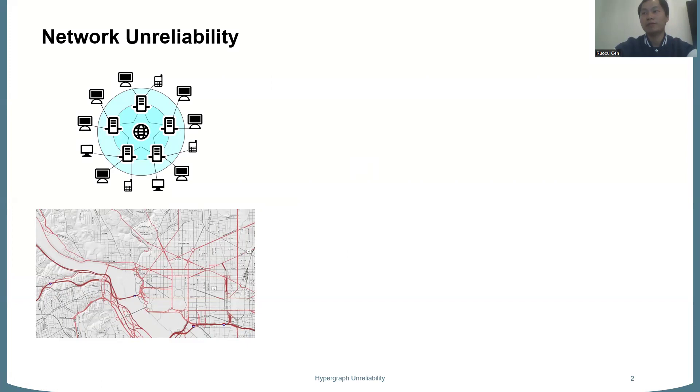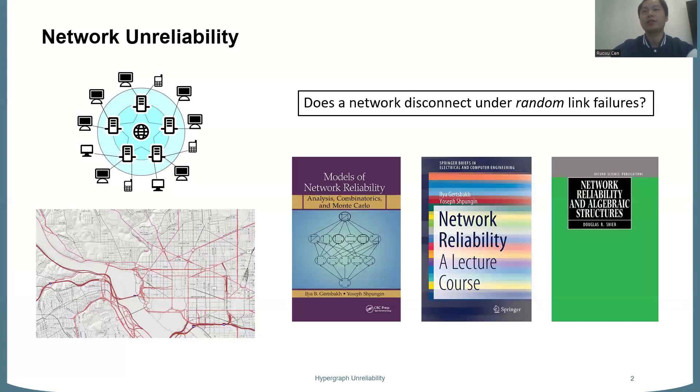In real-world networks, we can observe they are not perfectly reliable. For example, in communication networks, the cable might break, and in transportation networks, the railways might get bombed during a war. When that happens, we still want the network to stay connected so that every user can be served. Therefore, a key question to ask is, does the network disconnect under random link failures? Here we can assume the link failures are random also for simplicity, but it's also reasonable when we have little information about the failure. So this is actually a key question in the field of network reliability, and many books have been devoted to it.